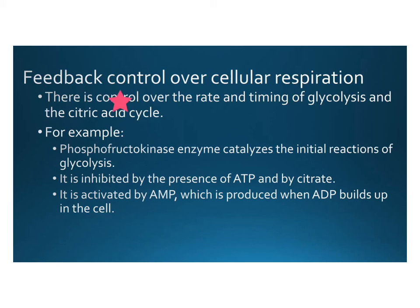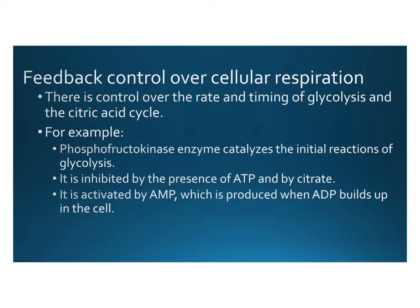Finally, let's talk about feedback control over cellular respiration. There is control over the rate and timing of glycolysis and the citric acid cycle at the cellular level. One example is the enzyme phosphofructokinase, which catalyzes the initial reactions of glycolysis. It is inhibited by the presence of ATP and by citrate, which is part of the citric acid cycle. So if ATP builds up — meaning the cell has plenty of energy — it inhibits phosphofructokinase, which stops glycolysis. This is efficient: if you have enough ATP, you don't need to be doing glycolysis.